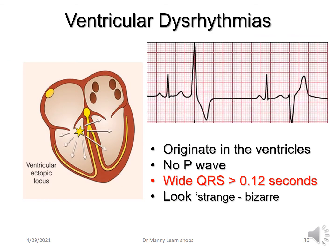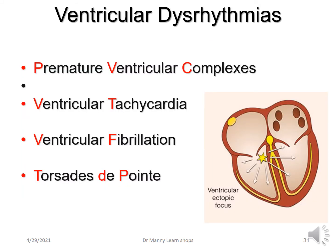Now we're going to review common ventricular dysrhythmias that occur in adults. Ventricular dysrhythmias originate in the ventricles, so they don't have a P-wave. Because they originate from the ventricles, which are very large, the QRS complex will be more than 0.12 seconds. The complexes are huge compared to the normal ECG beat — they look strange, bizarre, and scary, because they potentially can be. The ventricular dysrhythmias we'll look at are premature ventricular complexes, ventricular tachycardia, ventricular fibrillation, and torsades de pointes, and certain variations associated with that.